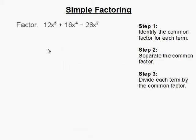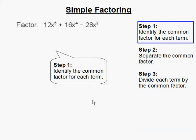Simple factoring. In this round we are going to factor out this expression by finding the term that they all have in common. Step 1: Identify the common factor for each term. Now let's start with the coefficient, and that is the number in front of the variable. 12, 16, and 28 they can all be divided by 4.